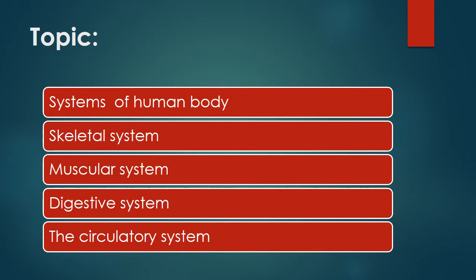Today we are going to learn more about the human body. In the previous lecture, we studied that many organs working together form a system. On this basis, there are seven kinds of systems in the human body. Today we will discuss four of them: the skeletal system, muscular system, digestive system, and the circulatory system.